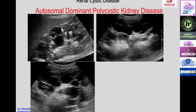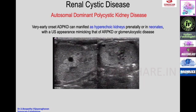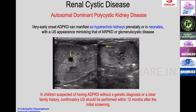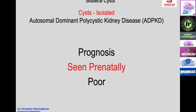Milk of calcium can fill some cysts in polycystic kidneys. Very early onset ADPKD can manifest as hyperechoic kidneys prenatally or in the newborn, mimicking ARPKD or glomerulocystic disease—bilateral enlarged echogenic kidneys with or without tiny cortical cysts. This should raise suspicion of ADPKD; with family history it is diagnostic. Children suspected of ADPKD without a genetic diagnosis or clear family history should have confirmatory ultrasound within 12 months. About 50% of ADPKD progress to renal failure; prenatal presentation carries a very poor prognosis.